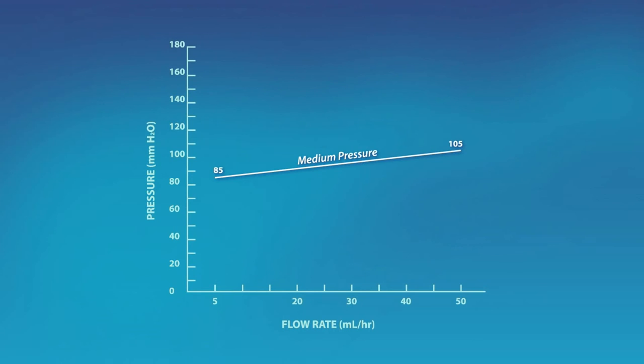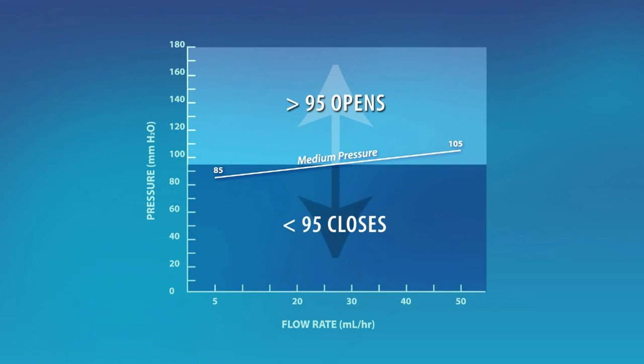For example, if a surgeon is using a medium pressure valve and an average flow rate of 25 milliliters per hour, the valve will have a nominal resistance of 95 millimeters H2O. Therefore, when the ICP is above 95 millimeters H2O, the valve opens and drains. When the ICP is lower than 95 millimeters H2O, the valve closes.